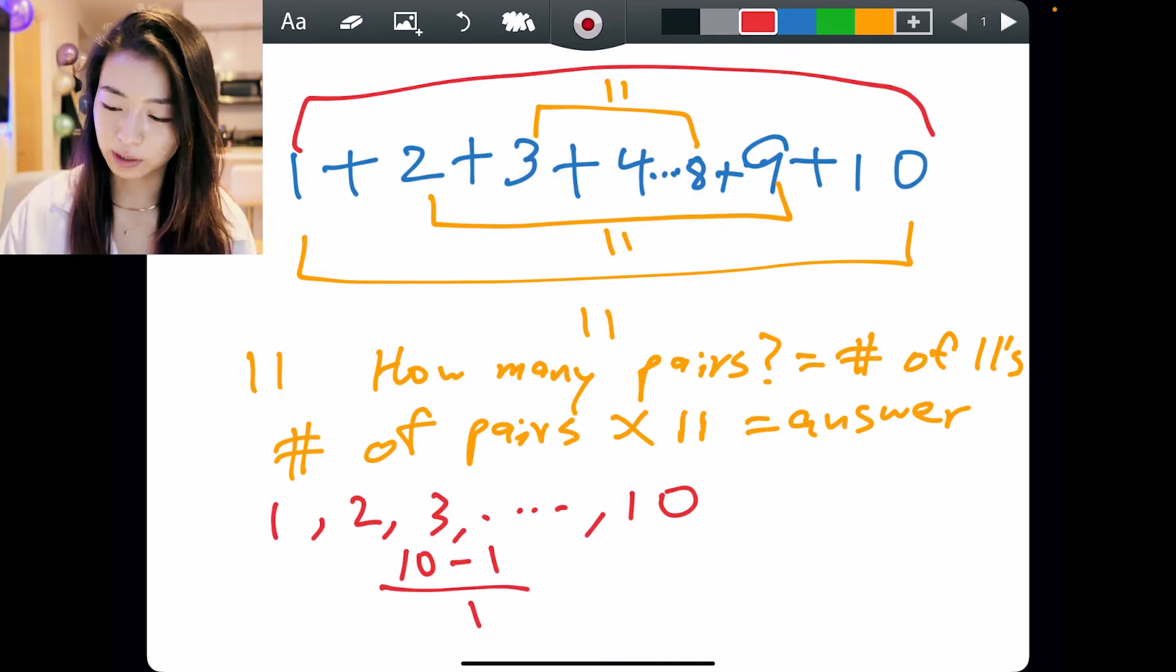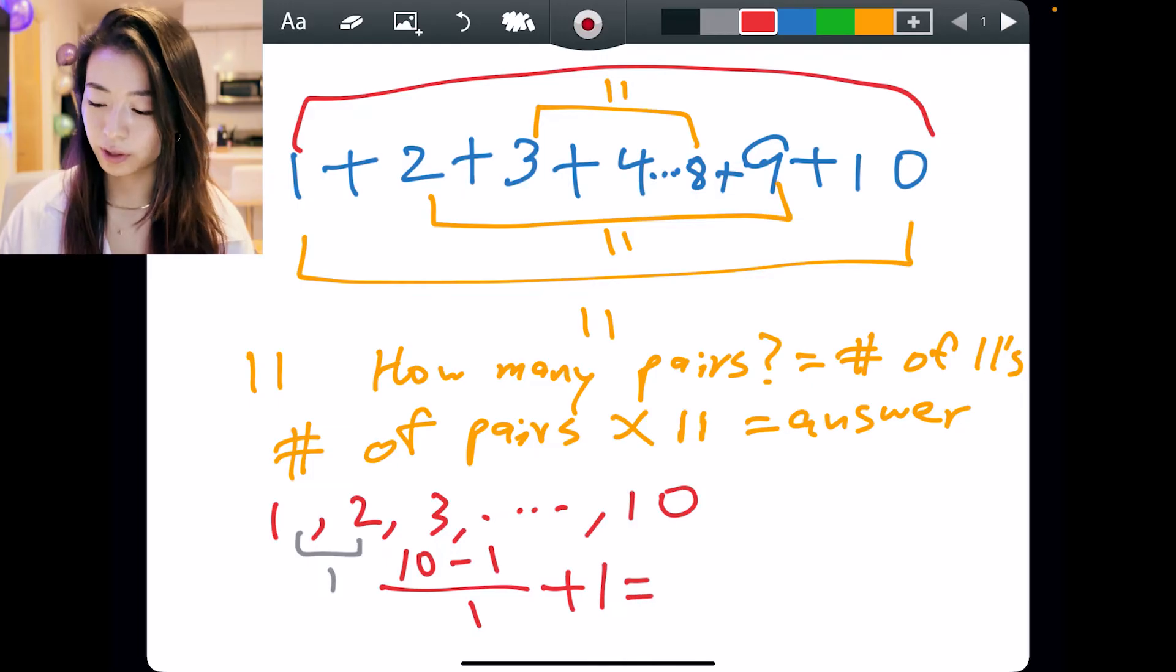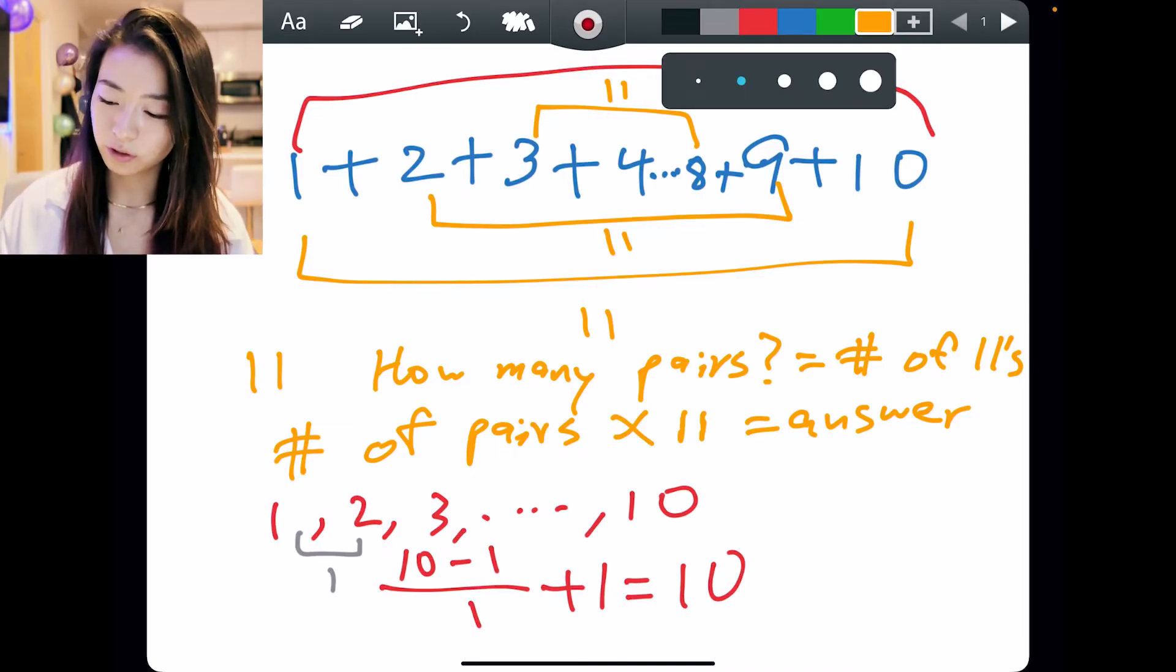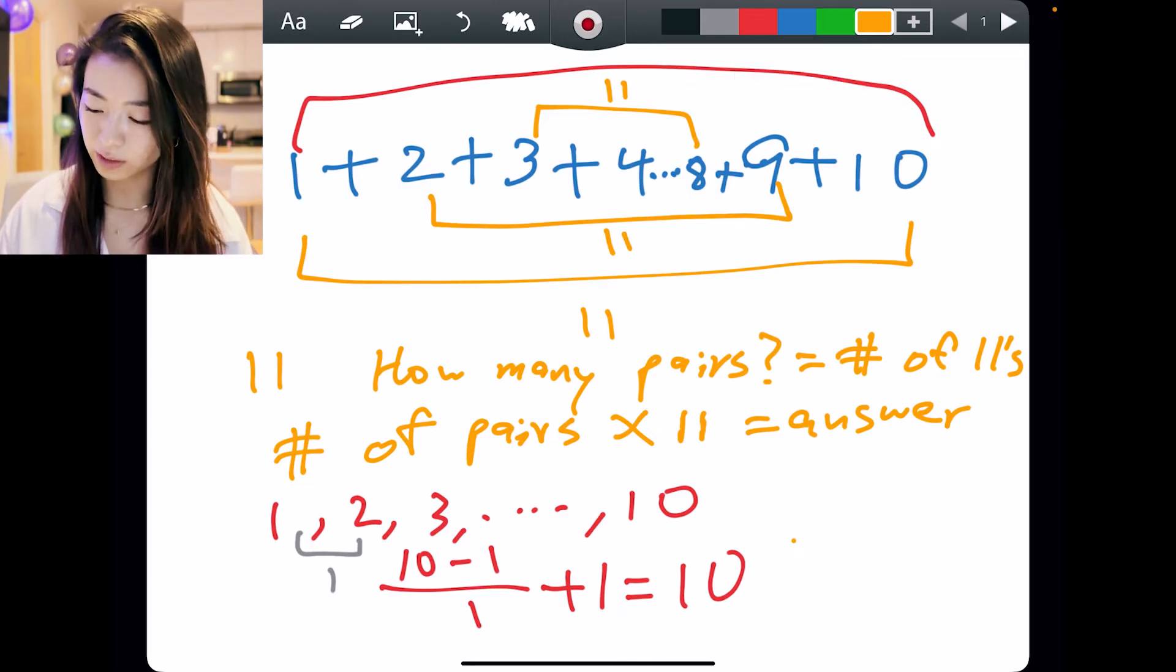Here, the increment is just 1 and then plus 1. So there are 10 numbers, which means that the number of pairs is 10 over 2 equals 5.